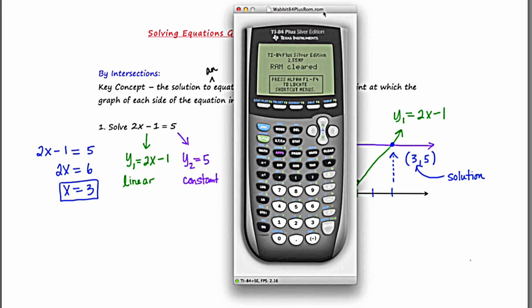I've queued up the graphing calculator and I'm going to go to the y equals screen at the top. And under y1, I'm going to put in 2x minus 1. I'm going to scroll down to y sub 2 and now I'm going to put in y sub 2 equals 5. I want to get a basic viewing window and to do that I'm going to press zoom and then option 6 which is the standard viewing window. It's 10 tick marks in each direction from the origin. And it's always a good window to start with.